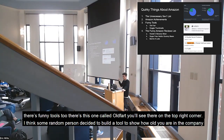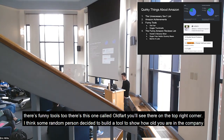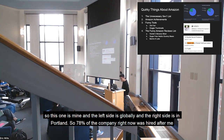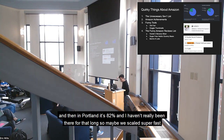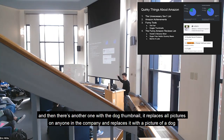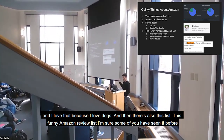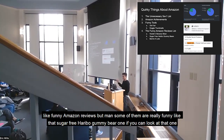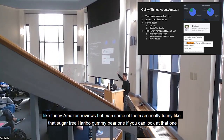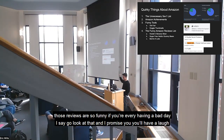There are some funny tools too. One called the 'old part' — some random person built a tool to show how old you are at the company. About 78% of the company right now was hired after me, and in Portland it was 82%. I haven't been there that long, so maybe we just grew a little too fast. And then there's another one where it replaces all pictures of anyone in the company with a picture of a dog. I just love that. And then there's also this funny Amazon reviews list — some of them are really funny. Like the sugar-free gummy bear one. If you're ever having a bad day, go look at that and I promise you'll come out laughing.